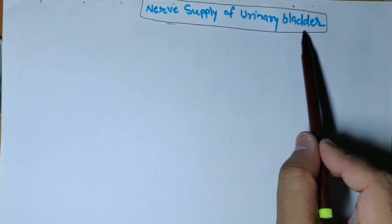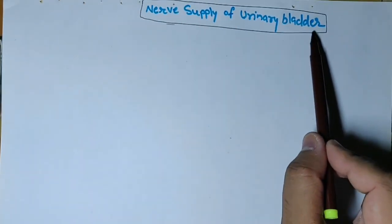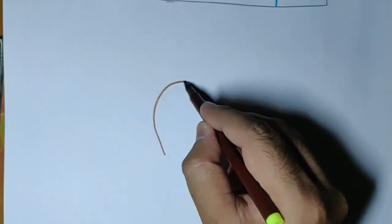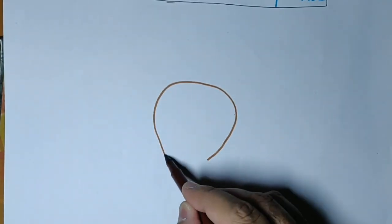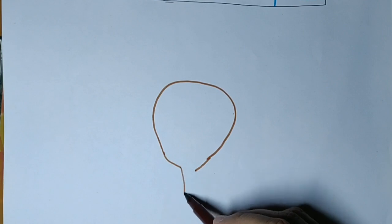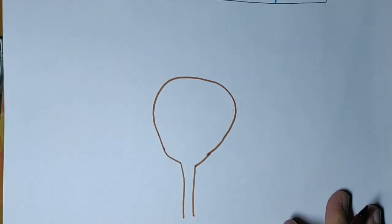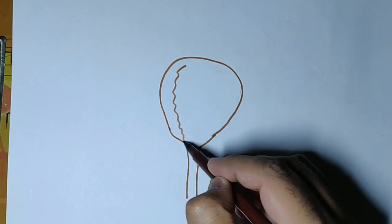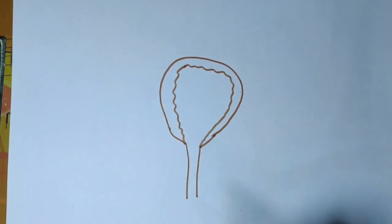Today we are going to see the nerve supply of the bladder. First we will draw the urinary bladder. As we study the nerve supply of the bladder, we have to see the sympathetic, parasympathetic, and somatic innervation.